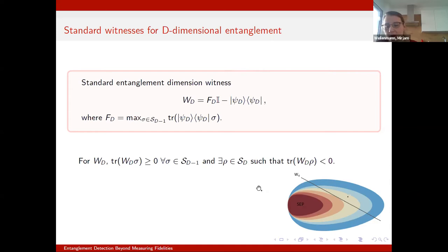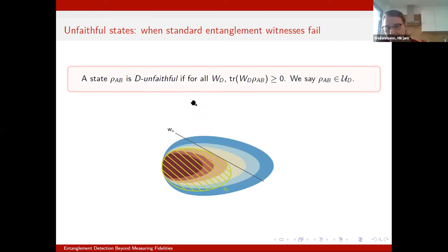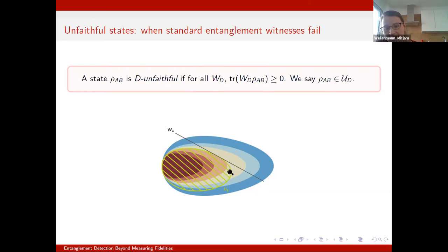What we wanted to understand first is when this doesn't apply. For this, we introduced what we call unfaithful states. We call a state unfaithful if for all witnesses from the fidelity construction, the witness doesn't work for that state. We introduce another set Ud, which is also convex. From the definition, all states that are at most three-dimensionally entangled will obey this condition, so U4 contains S3. But the region we're really interested in is between the orange and the boundary of U4, where states have higher entanglement dimension but cannot be certified this way.